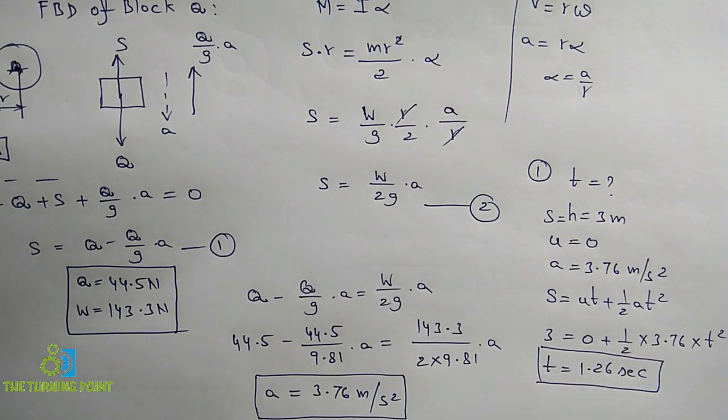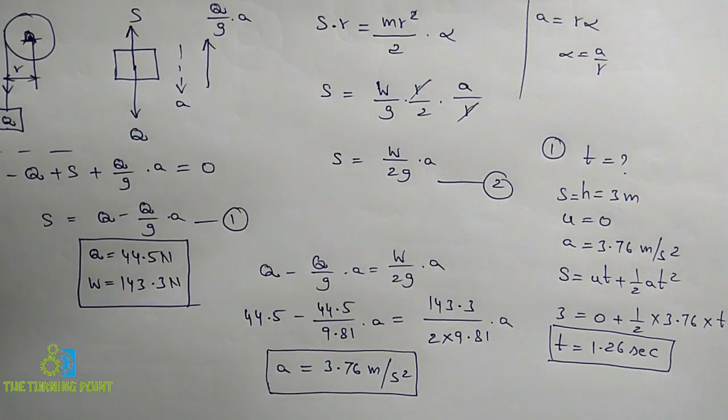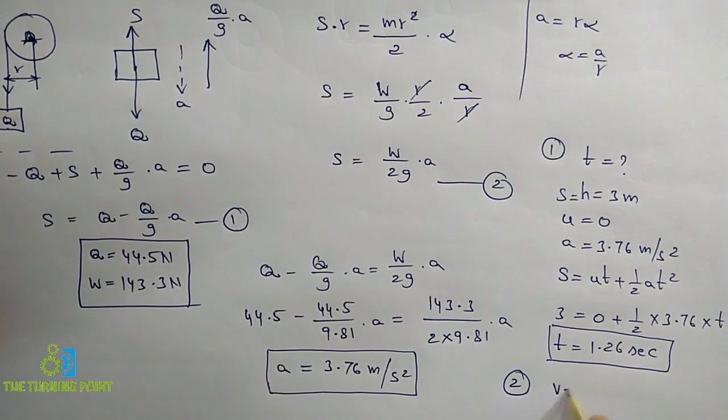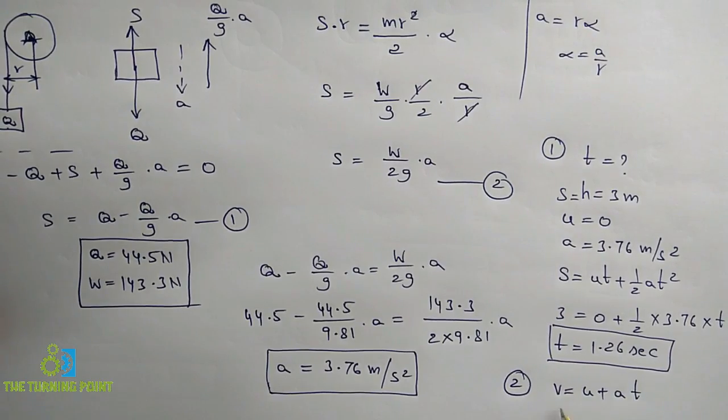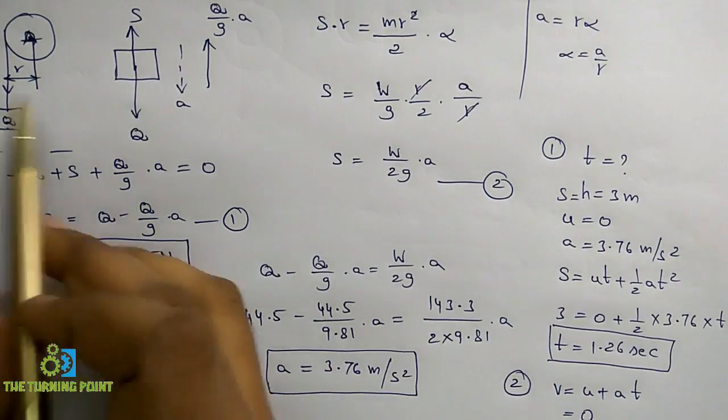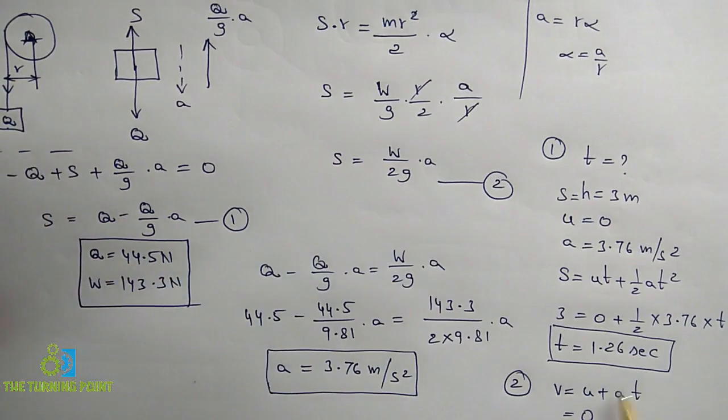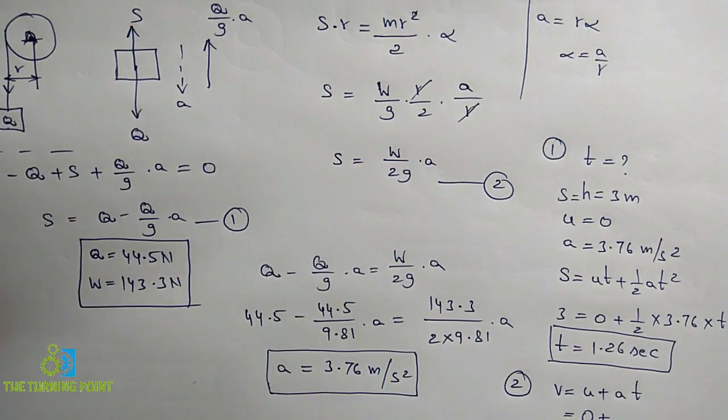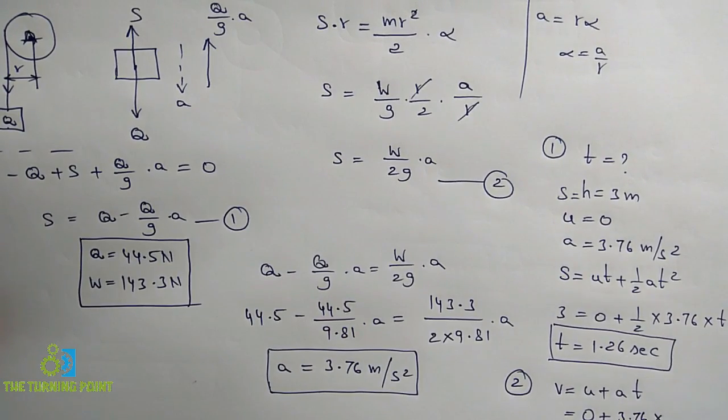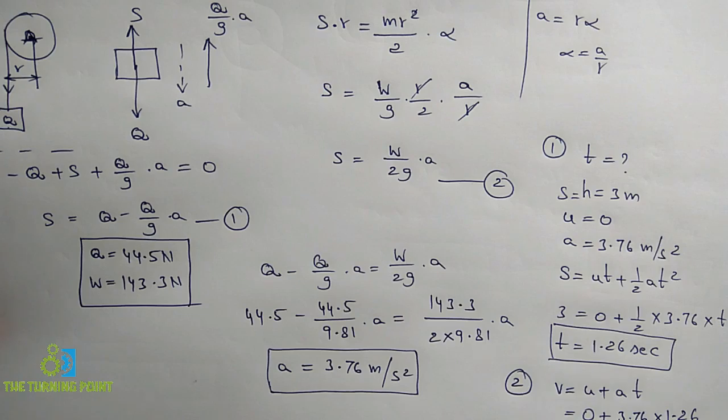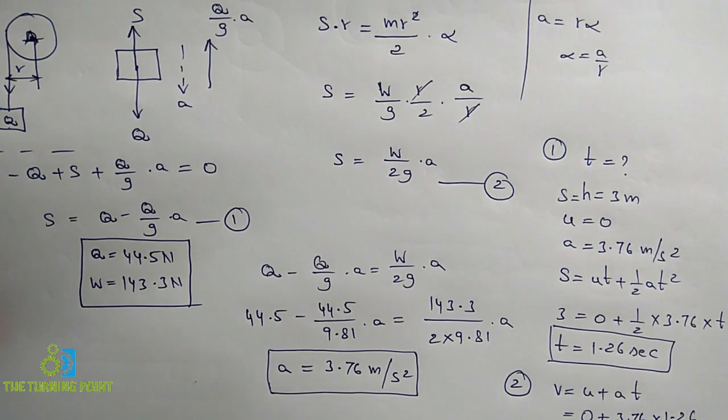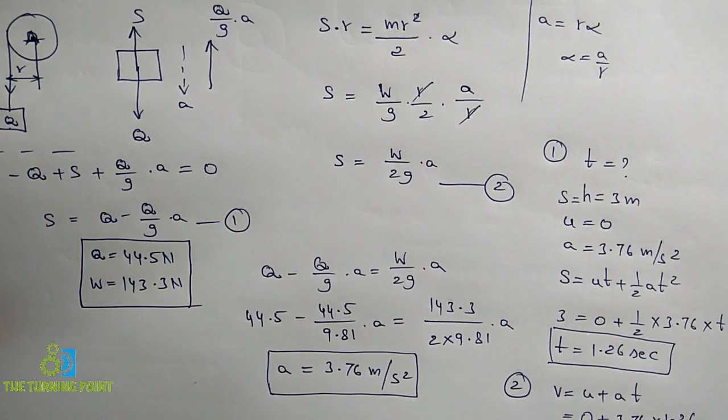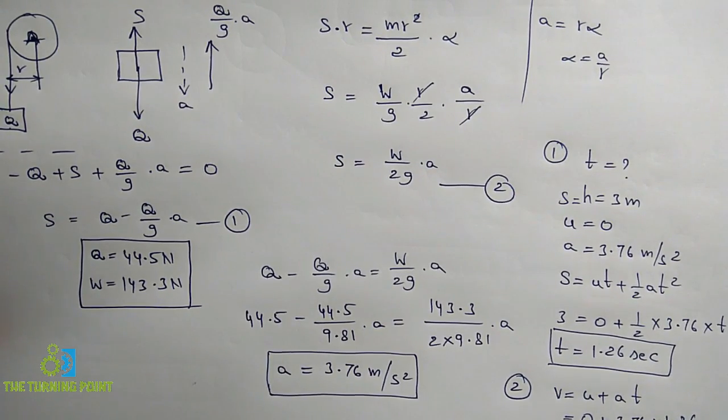Read the second bit: with what velocity v will it strike the floor? That means you need to find the final velocity of the block. The relation between final velocity, initial velocity, acceleration, and time is V=U+AT. Initial velocity is zero because this block is started from rest. And acceleration you have already calculated, which is 3.76 meters per second squared. And time just now calculated, 1.26 seconds. Substitute that, you will find the value of velocity which is 4.73 meters per second. This is the velocity with which the block will strike the floor.